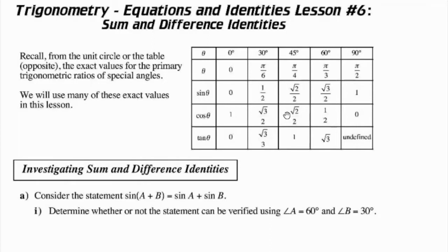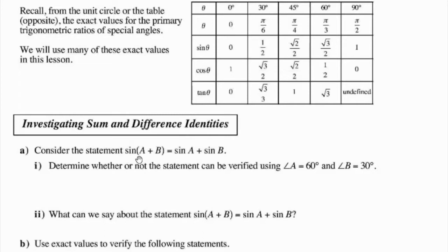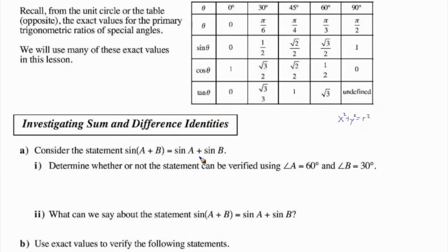We'll use many of these exact values when we're looking at the sum and difference identities. Taking a look at this statement, we have sine of one angle A plus another angle B, and we want to know: is that equal to the sine of the first angle plus sine of the second angle? We're familiar with other formulas — we know that it's not just X plus Y equal to the hypotenuse, but X squared plus Y squared equal to R squared. So there is a different relationship than just addition — I wonder if that's the case here.